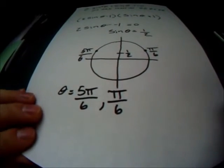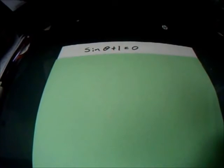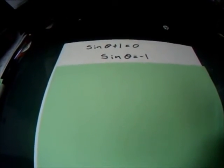Now, for the next part, we need to solve the other side. So we're going to set the side equal to 0. So we have sine theta plus 1 equals 0, and we need to solve. So sine theta equals negative 1.